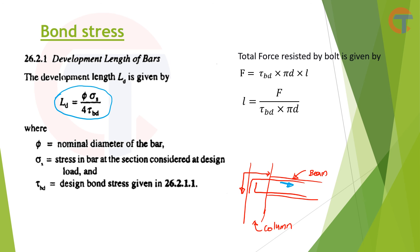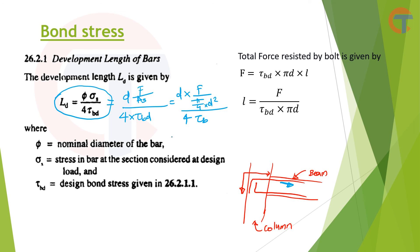This development length formula and the bond strength formula are actually the same. Substituting σ_s = F / A_s, where A_s = (π/4) × D², the expression becomes: L_D = D × F / [(π/4 × D²) × 4 × τ_BD] = F / (π × τ_BD × D). The D terms and 4 terms cancel, giving F / (π × τ_BD × D) — which is exactly the rearranged bond strength formula. So both formulas are equivalent.